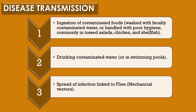Disease transmission of Shigella species. Organisms are spread through the faecal-oral route and transmission is typically through one of three mechanisms. The first mechanism is ingestion of contaminated foods washed with faecally contaminated water or handled with poor hygiene, commonly in tossed salads, chicken, and shellfish. The second mechanism is drinking contaminated water or in swimming pools. The third mechanism is spread of infection linked to flies, which are widely considered as mechanical vectors.